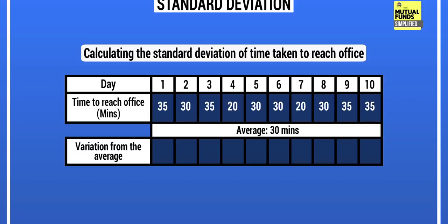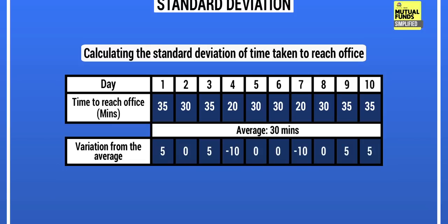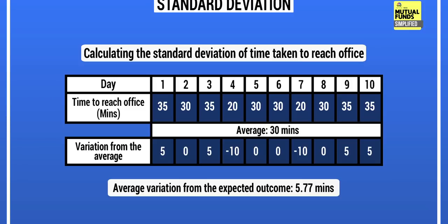On day one you took 35 minutes, so the variation from the average is +5. On day two the variation is nil. Day three gives a variation of +5 again. On day four the variation is minus 10 because you took only 20 minutes. The average variation from the expected outcome works out to roughly 5.77 minutes. Importantly, all deviations — positive or negative — are both considered as risk, so minus 10 minutes is still counted as a +10 risk.